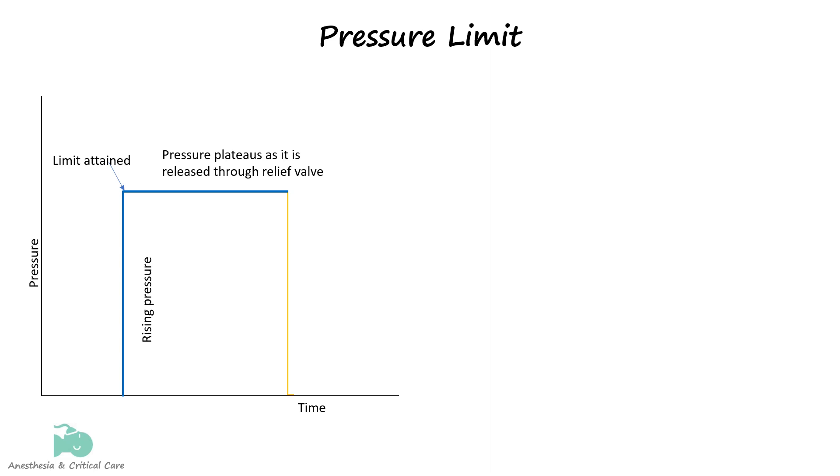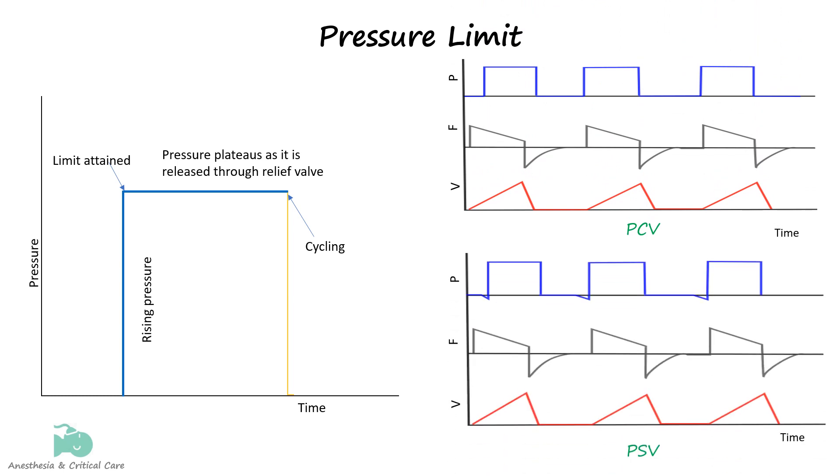The breath simply doesn't cycle into expiration when the limit is reached, rather the limit pressure is maintained in the lungs. Pressure control and pressure support ventilation uses pressure limiting to limit the breath.